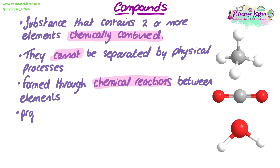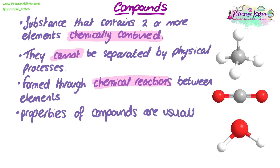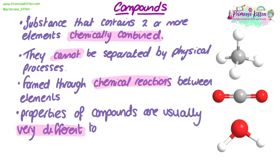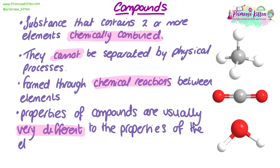Compounds are always formed by chemical reactions between two or more different elements. The properties of a compound after those elements have chemically reacted are likely to be very different to the properties of the elements that combined to form it. An example of this is water — hydrogen and oxygen, which combine to form H2O, are both colourless gases at room temperature, whereas water is a liquid at room temperature. Therefore, the properties of water are very different to its component elements, hydrogen and oxygen.